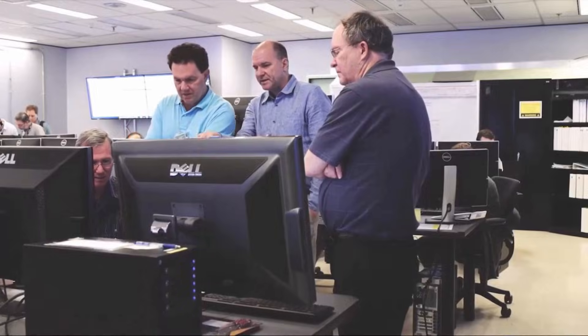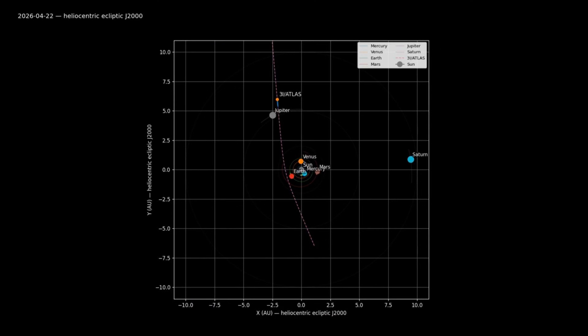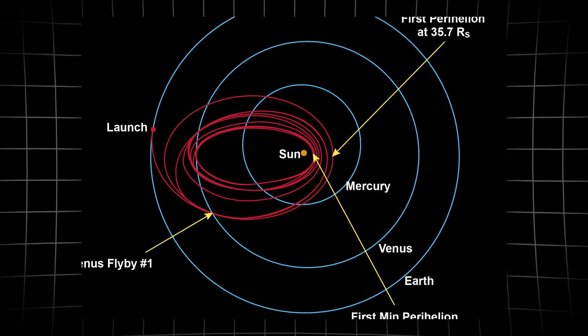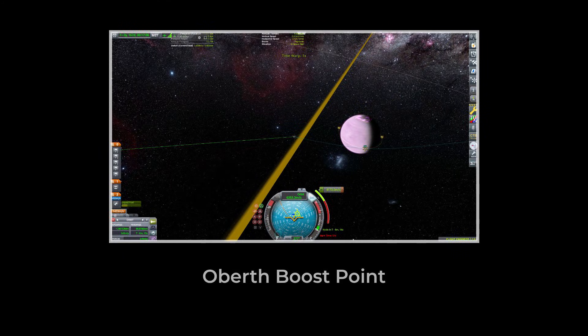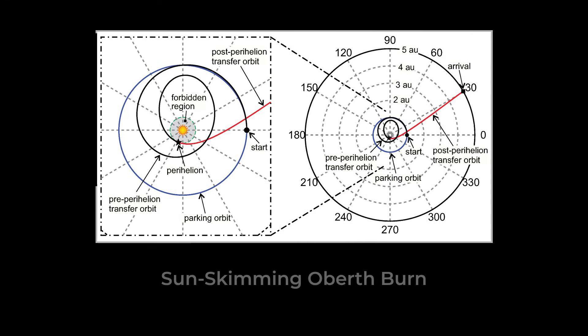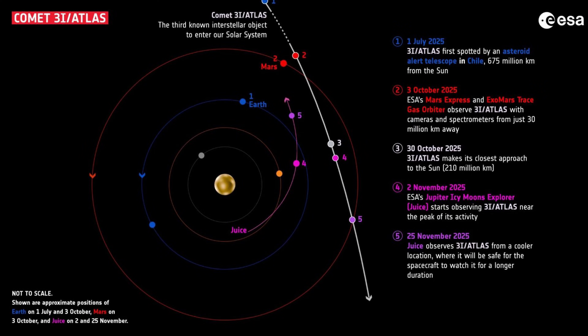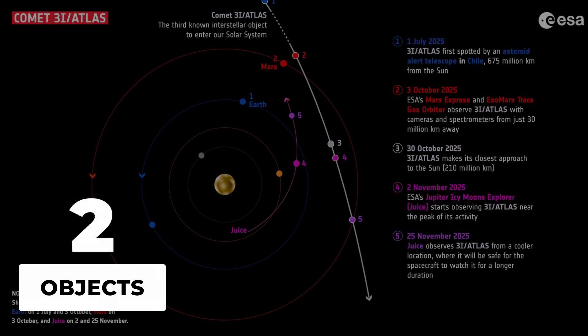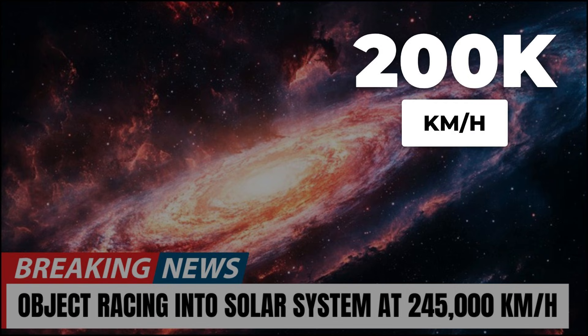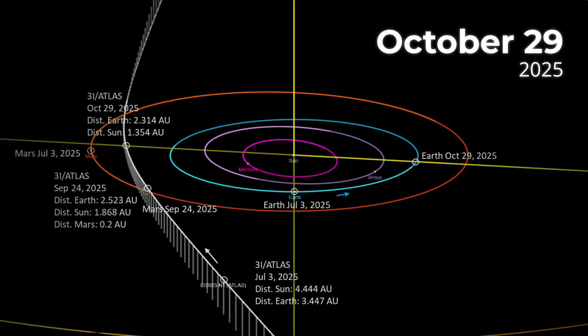This alignment isn't just a curiosity, it changes what's possible at perihelion. An object approaching along the ecliptic meets the sun at a shallow angle, maximizing the window for any maneuver that takes advantage of solar gravity. If a spacecraft designer wanted to use the Oberth effect, a way to amplify a rocket burn by timing it for maximum speed near the sun, this is the geometry they'd choose. Discovered July 1, 2025 by the ATLAS survey in Chile, 3i-Atlas is only the third confirmed interstellar object. Its inbound speed, over 200,000 km per hour, confirms it's not bound to the sun.